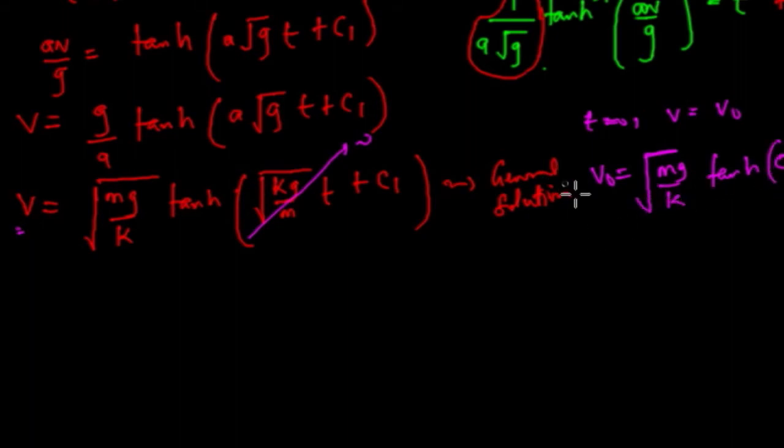This actually goes to zero and then becomes hyperbolic tangent of c1. So to find c1 now, c1 is just going to be the arc tangent of v naught root k over mg.